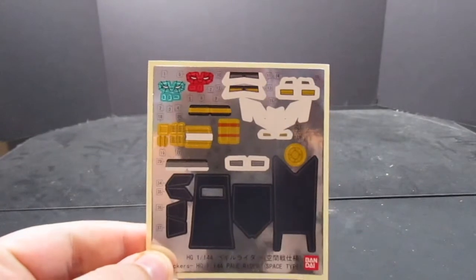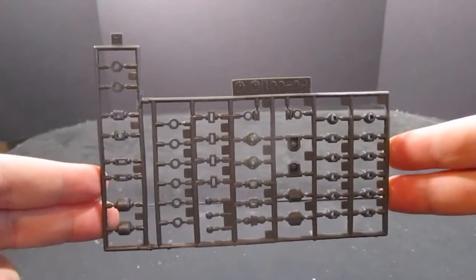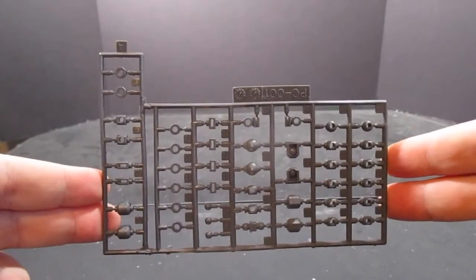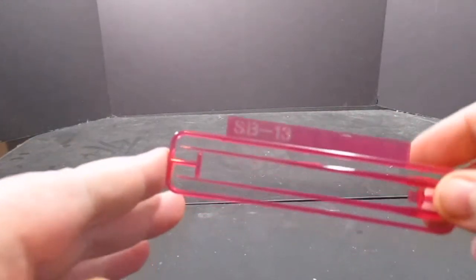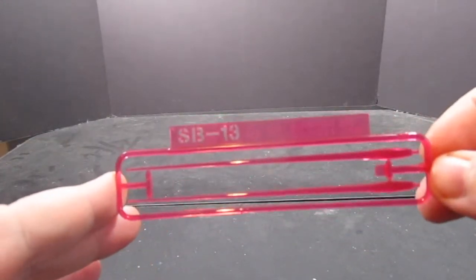Once in the box, you're gonna find a huge sheet of stickers, and I'll explain why you get so many here in just a moment. Here's what the polycaps look like, which is just kind of a standard high grade set, and you get a pair of saber handles.